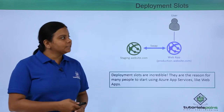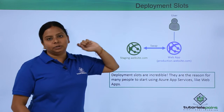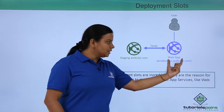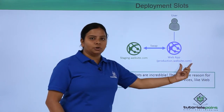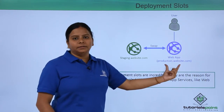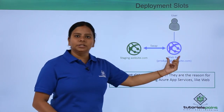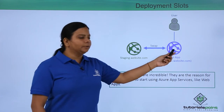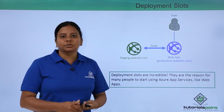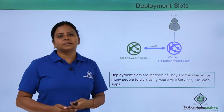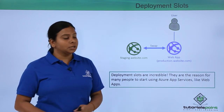For example, you have created your application and your users are connecting to it. You have created a web-based application on a deployment slot called production.website.com — this is a default deployment slot and all users are connecting to it. Now, what if you want to create a new slot to divert some users to a different deployment slot?